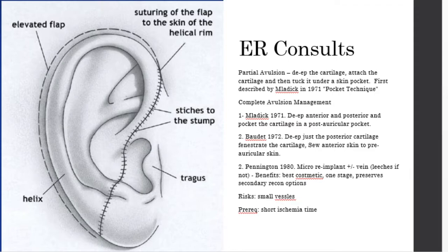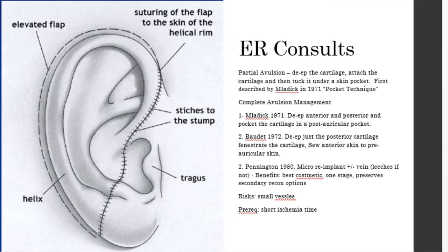The photos for the Baudet technique in the reviewed paper didn't look great. In 1980, Gail Pennington described the first micro-reimplantation of the ear, described with and without venous anastomosis — sometimes just arterial anastomosis is used, requiring leeches for venous drainage. Benefits: improved cosmetic result in one stage while preserving all reconstruction options. Risks: requires microvascular technique, the vessels are very small, ischemia time should probably be in the four to six hour range, and the ear should be stored in a paper towel on ice.